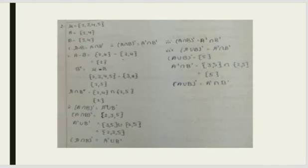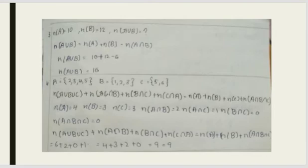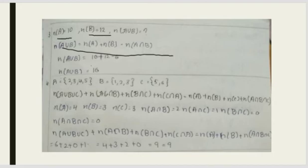The third question: n(A) = 10 and n(B) = 12. We apply the formula n(A∪B) = n(A) + n(B) - n(A∩B). Substituting: 10 + 12 - 6 = 16. So the answer is 16.